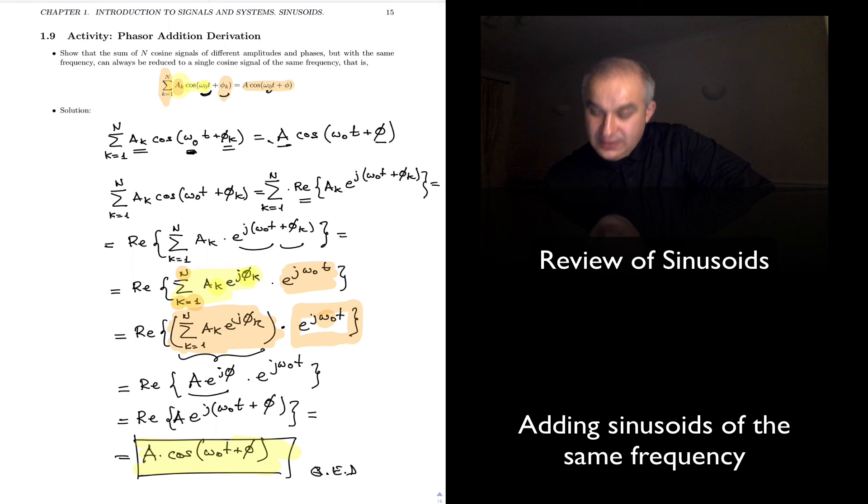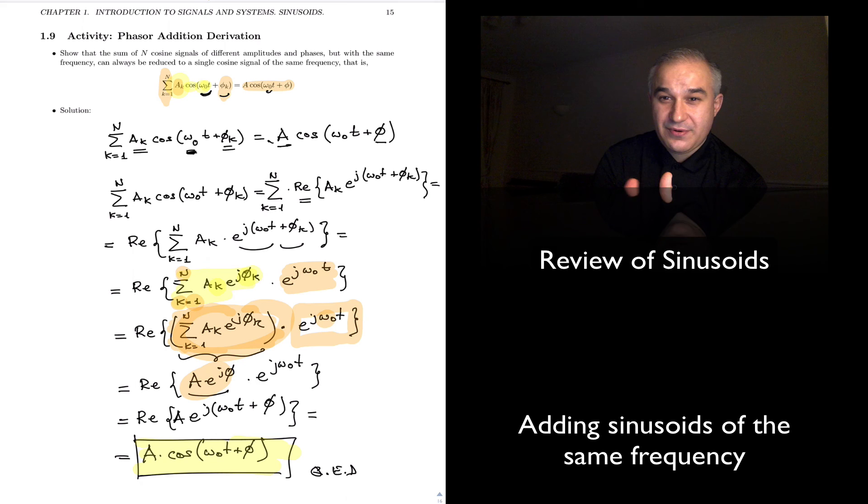summatory variable, and so when we added this, we got just a number, and then we can, a phasor, which is a complex number with an amplitude and a phase that we put back to get our final results, our final result. Thank you.